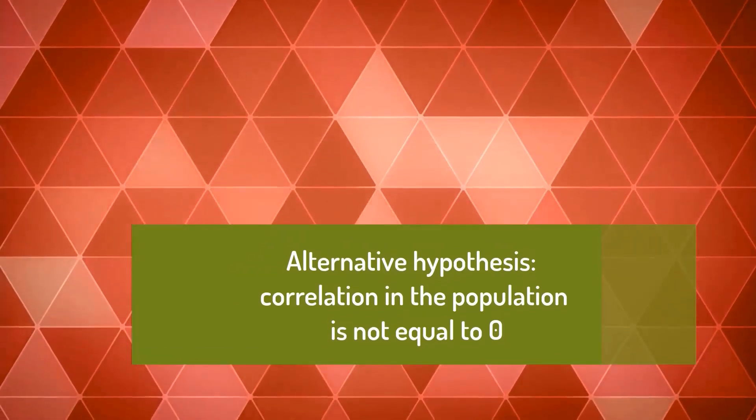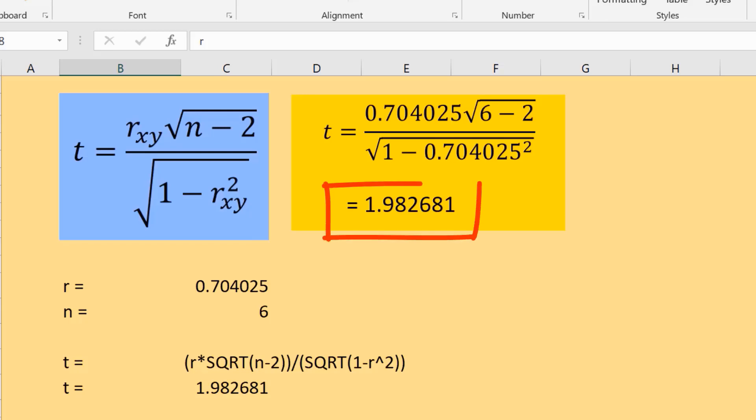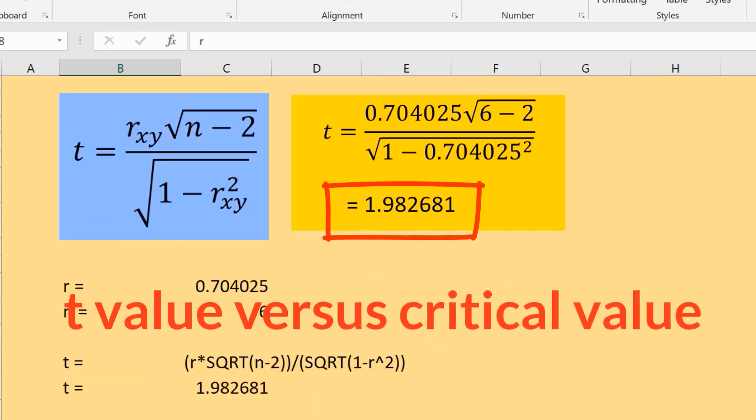Manual calculation results in t value of 1.98268. We will compare this t value with a critical value.